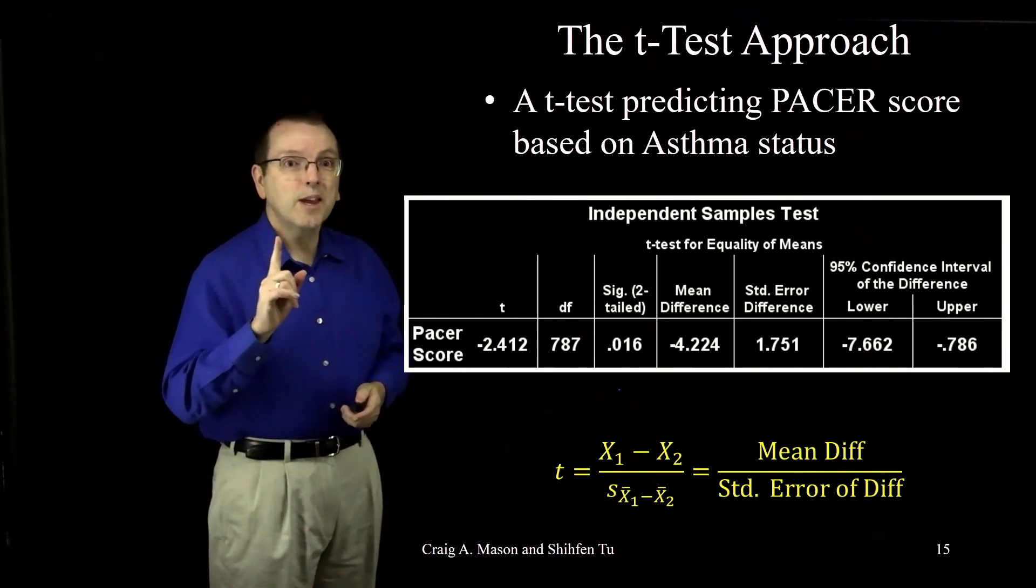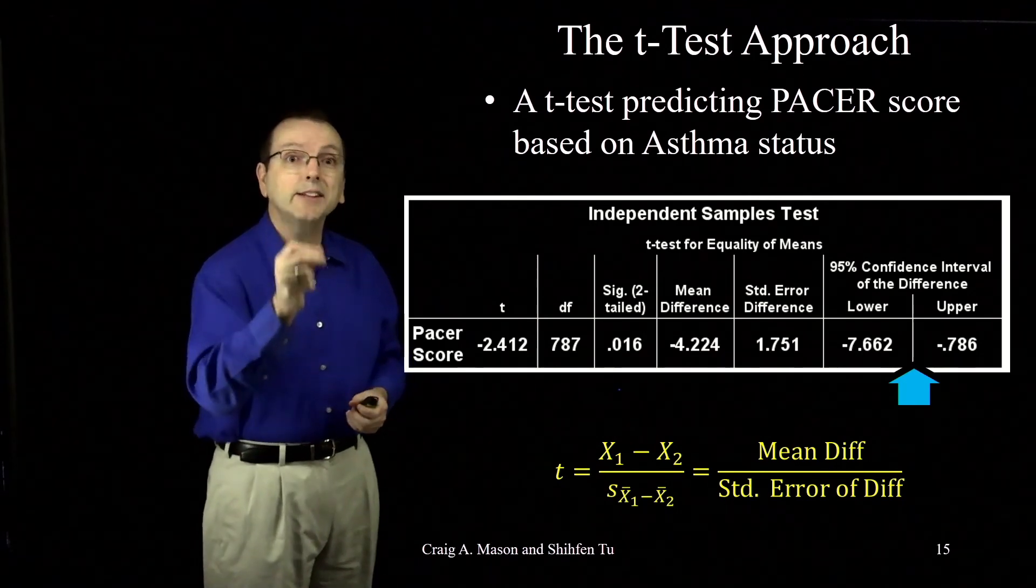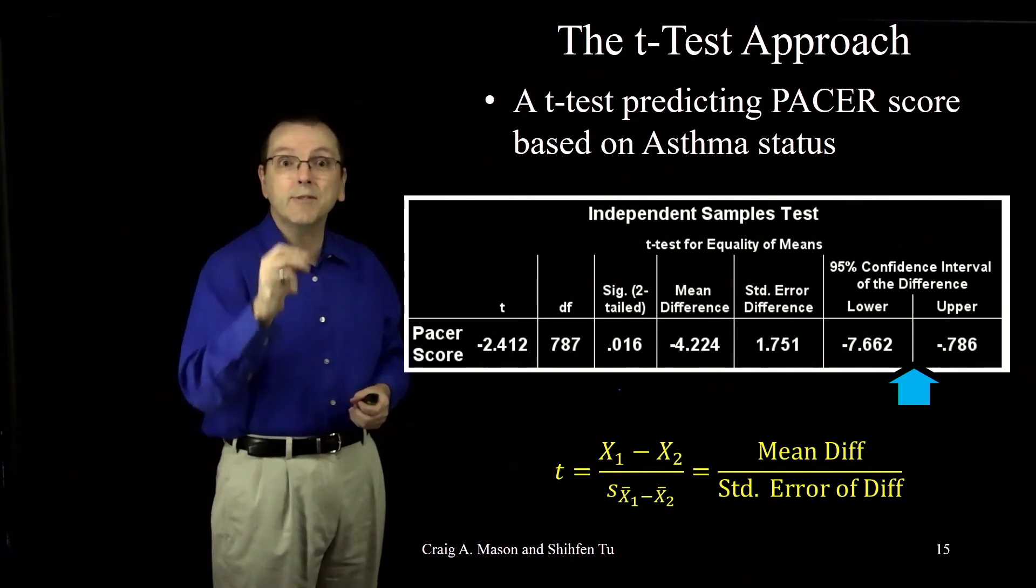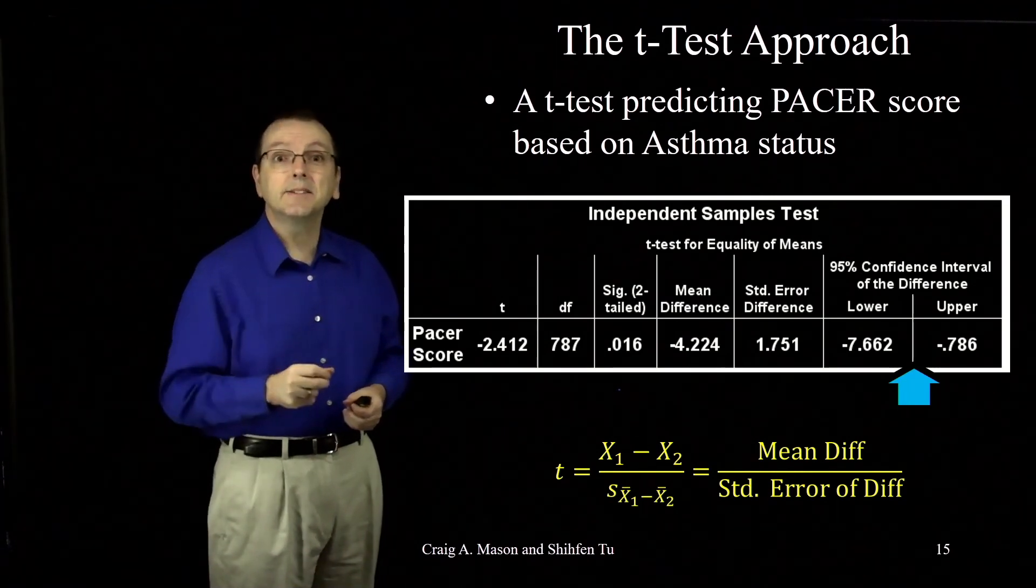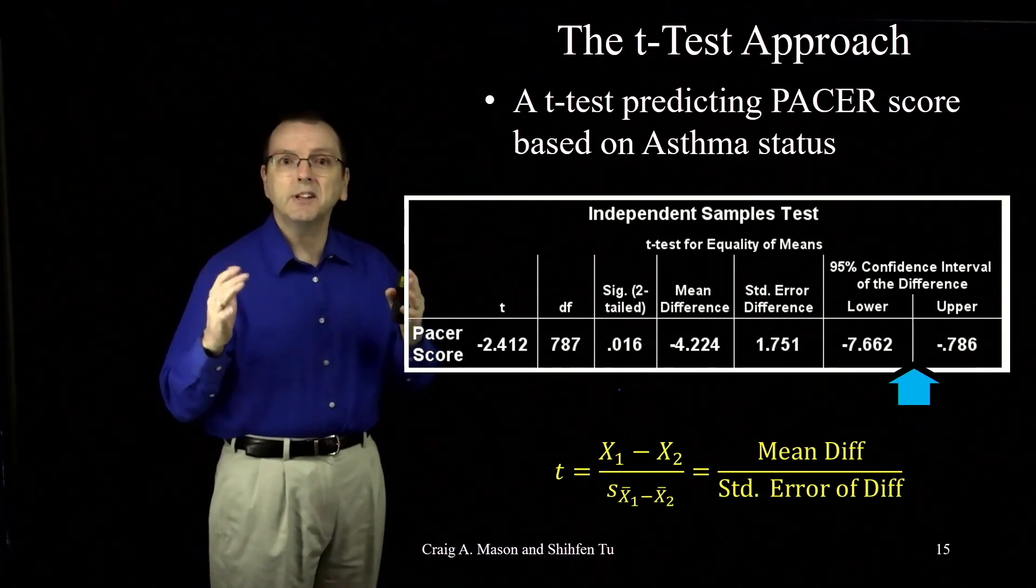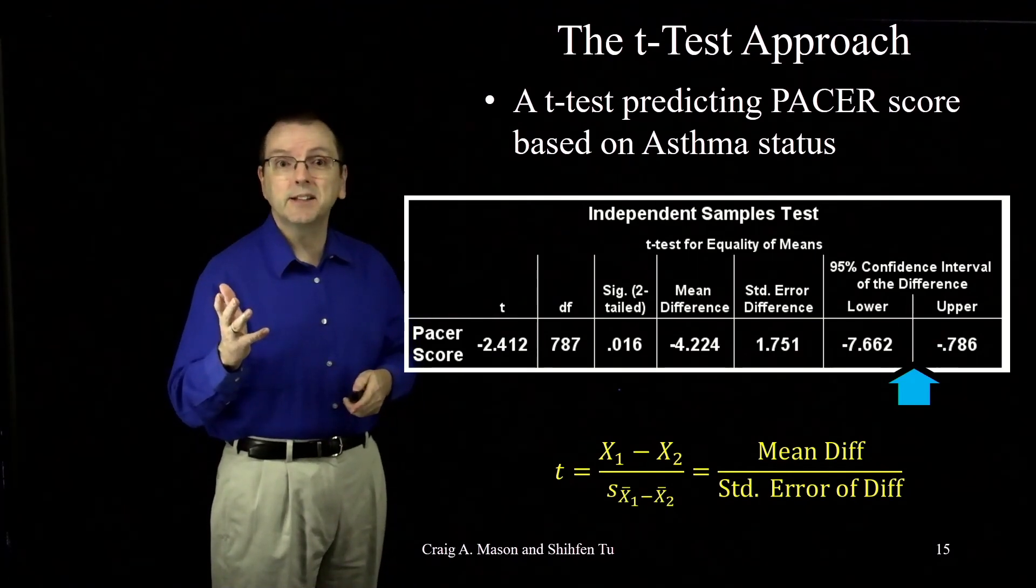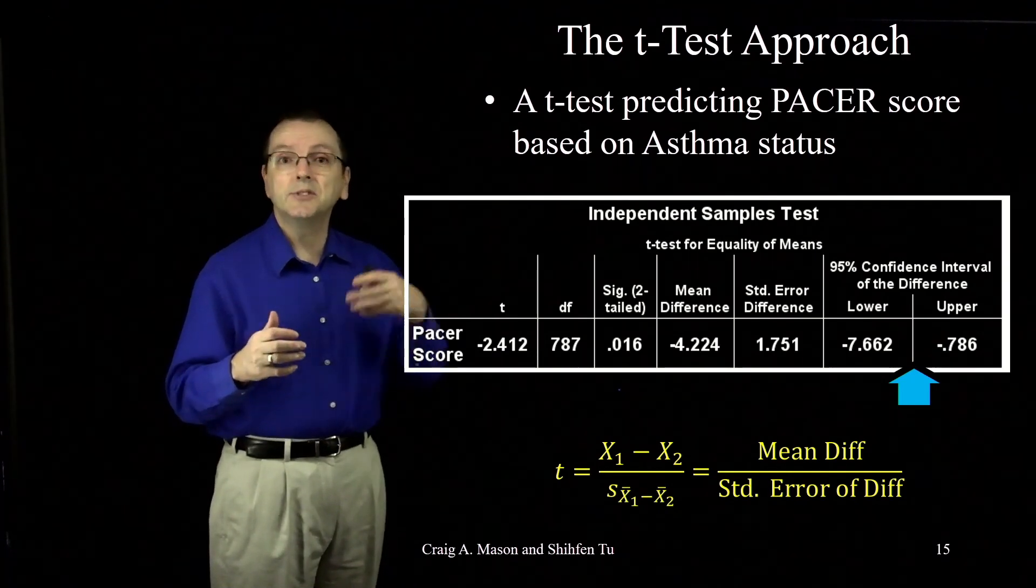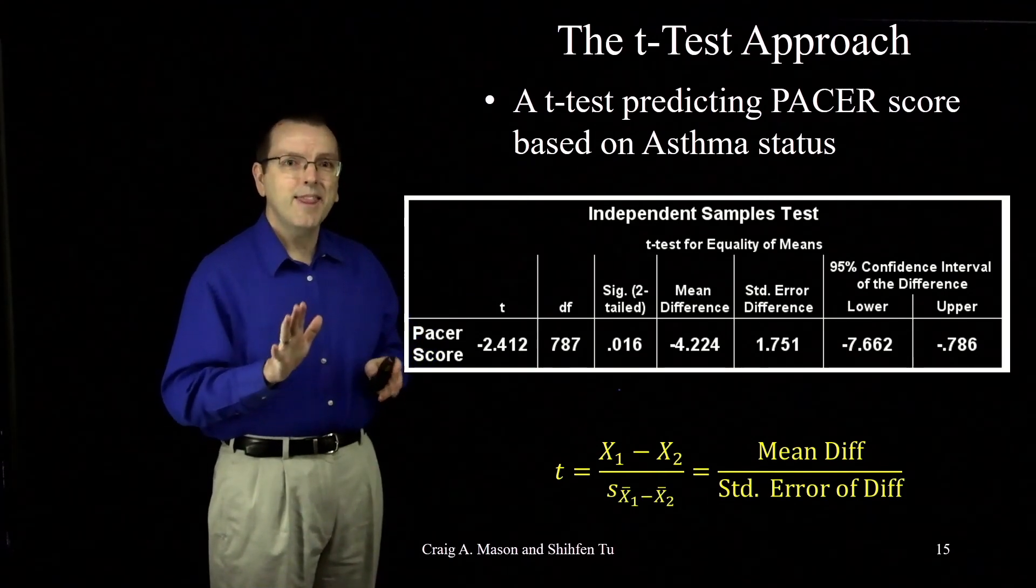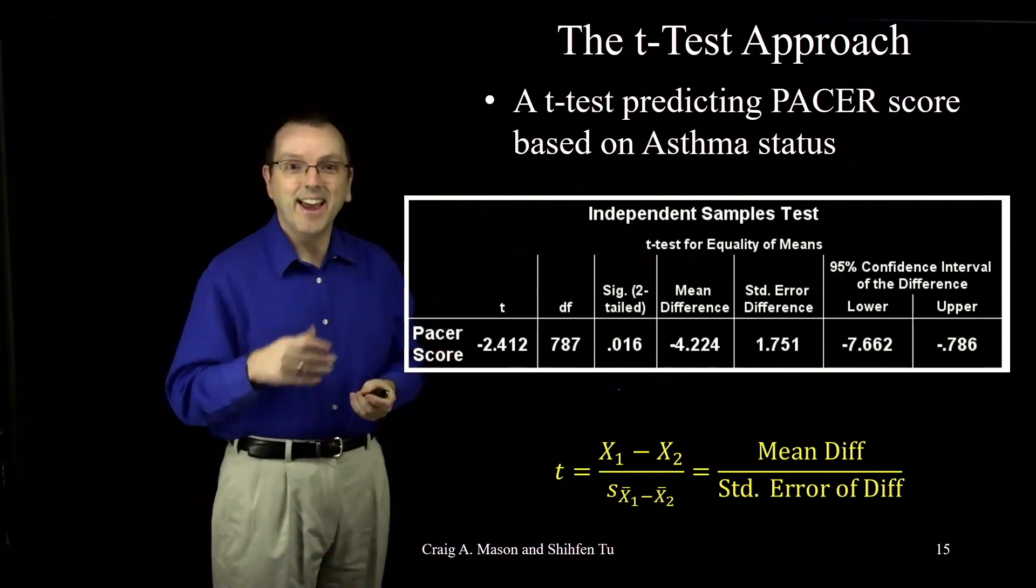And notice, we even have the 95% confidence intervals that tell us how precise we think that that estimate of negative 4.224 difference really is. We're 95% confident that the true difference in the population means is somewhere between negative 7.662 and negative 0.786. All right, so that's our trip back to intro stats land and the t-test.